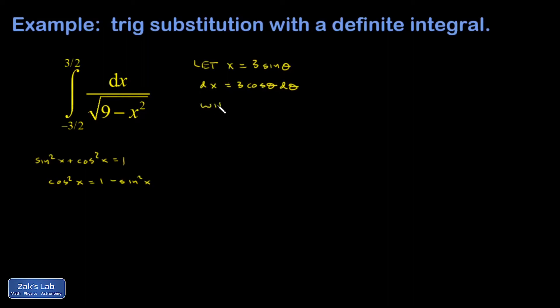So when x equals negative 3 halves, I have negative 3 halves equals 3 sine theta, and I've rigged this problem to come out really nice. So I end up with negative 1 half equals sine theta. So theta is the angle whose sine is negative 1 half, which means we're talking about negative pi over 6.